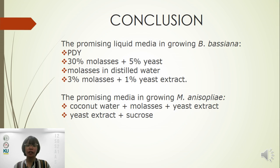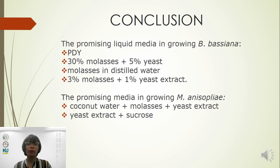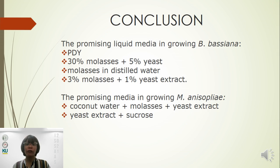Liquid media have been increasingly used for large-scale fungi production because they allow better control of physical and nutritional conditions required by the microorganism. They can be easily mixed with carriers and sprayed on the field, and can be used as inoculum for substrate production. Liquid media can be a cheaper alternative — for example, mass-producing Metaricium Anisoplyae using yeast extract and sucrose: one liter will yield 2.99 × 10¹² spores per ml and will cost 102 pesos or 2 US dollars to make.